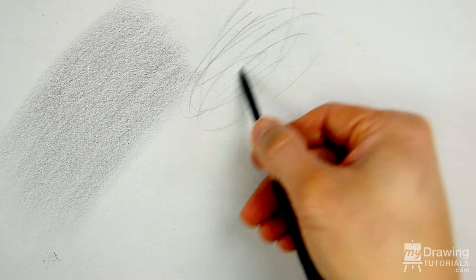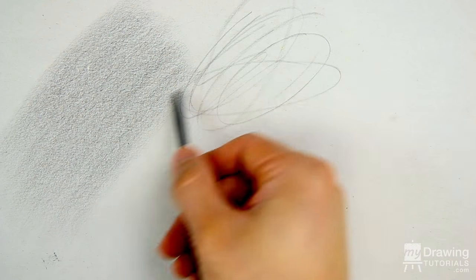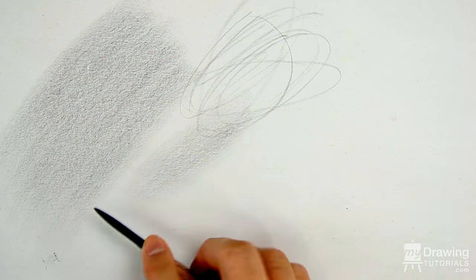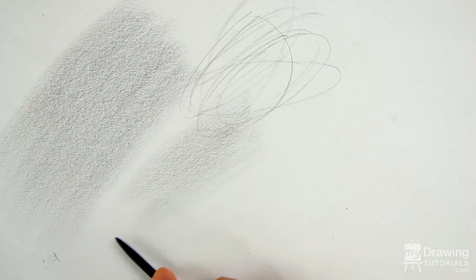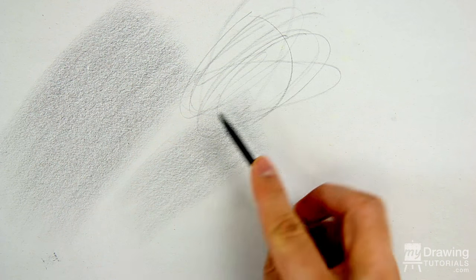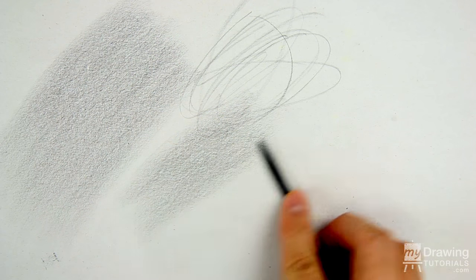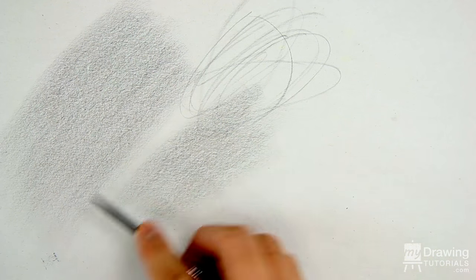If you're going to use the tip of the pencil a lot, it will obviously become dull over time. In which case, you can resharpen it with the sandpaper or you can use the time when you're shading with the side to resharpen the tip. By switching back and forth between using the tip and the side, you'll get a lot more mileage out of your pencil between each sharpening.